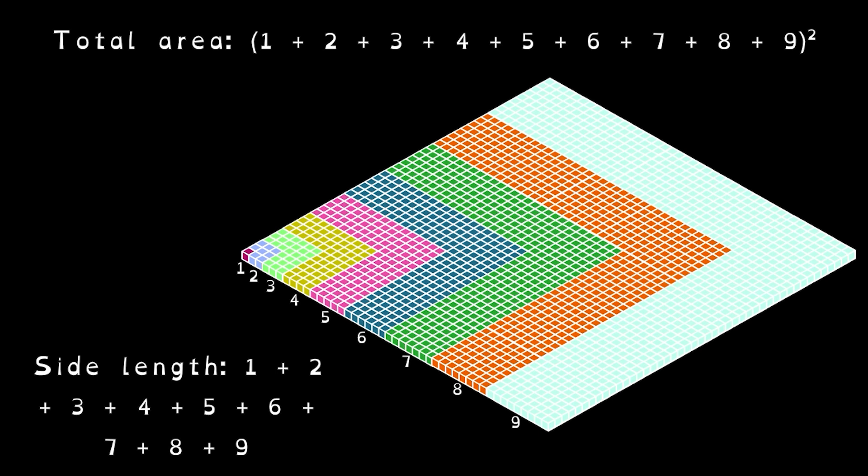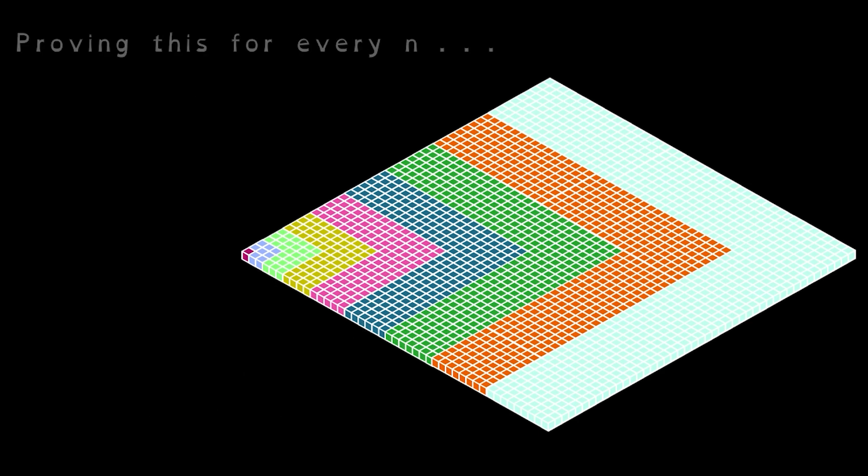Since it's the same number of cubes in both forms, we have the fact that 1 cubed plus 2 cubed and so on until 9 cubed is the same as 1 plus 2 plus 3, and so on until 9 squared. Now, proving this for every n in the geometric way is a bit difficult, which is part of the reason I've included an algebraic proof. But hopefully, this animation showcases the basic idea.